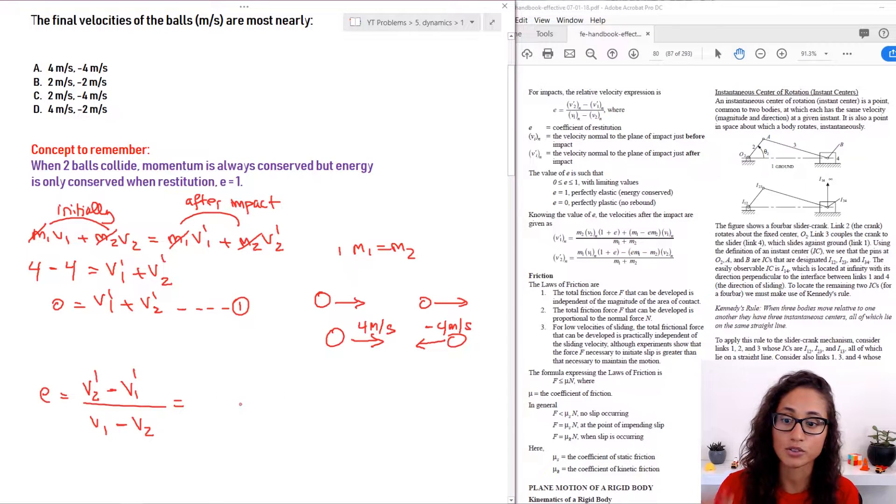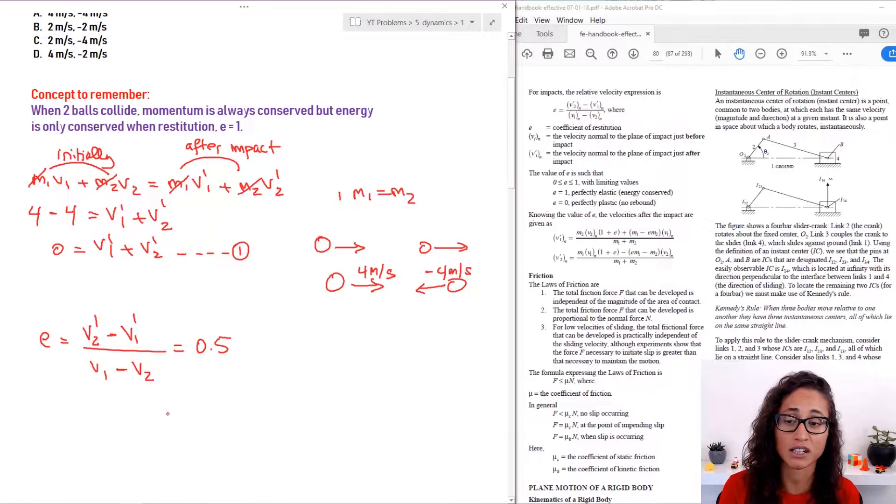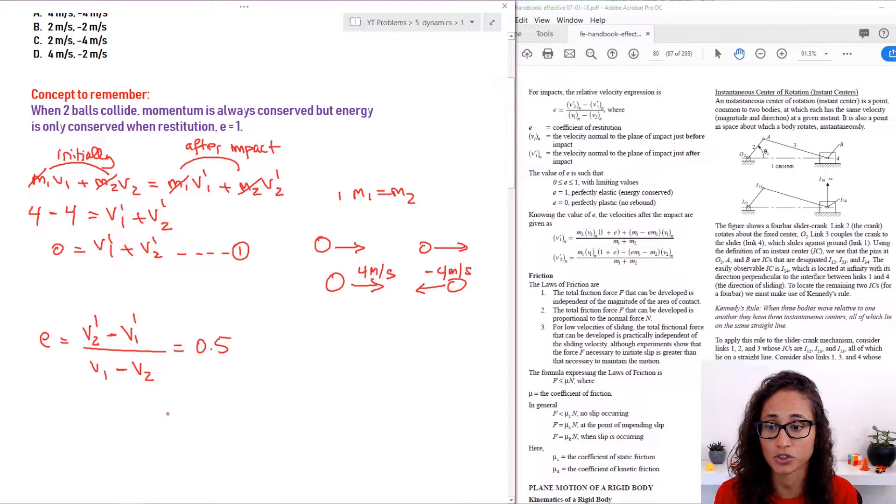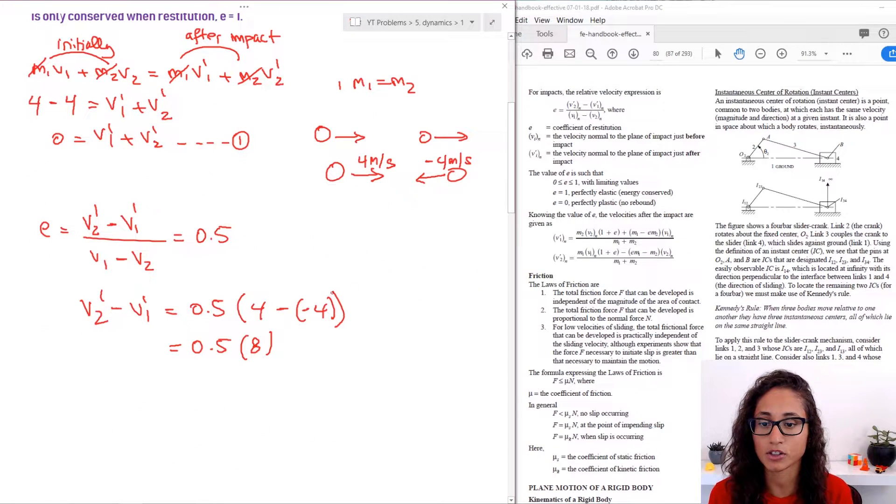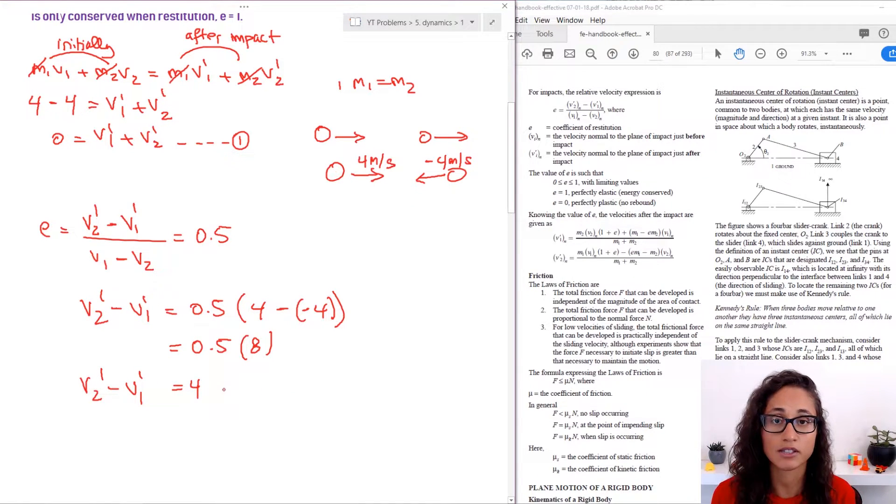So let's write the equation down. This is my restitution equation. E was given as 0.5. V2 prime, V1 prime, that's what we're trying to calculate for. Those are the final velocities. So now we know what V1 and V2 is, so let's substitute that. So I'm going to get V2 prime minus V1 prime equals 0.5 times, so V1 we said is four, and then V2 is minus four. So I'm going to have minus minus four. So I'm going to have 0.5 times four plus four, which is eight. So this is going to be equal to four. So V2 prime minus V1 prime equals four. Let's call this equation two.